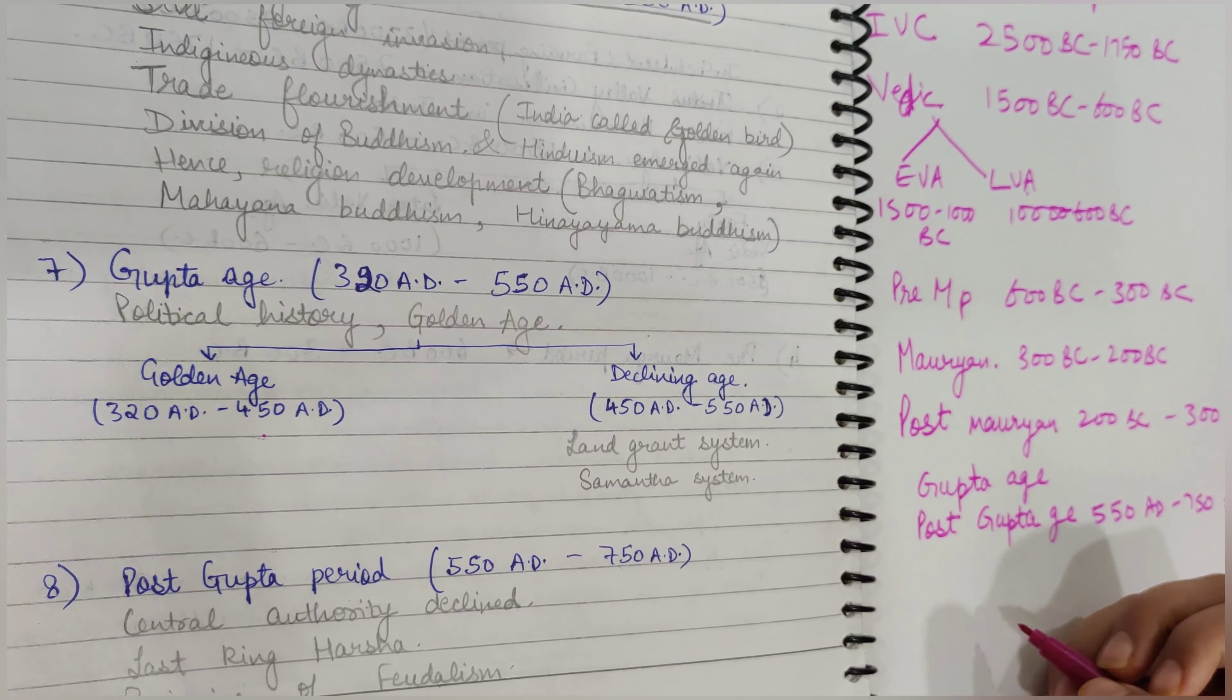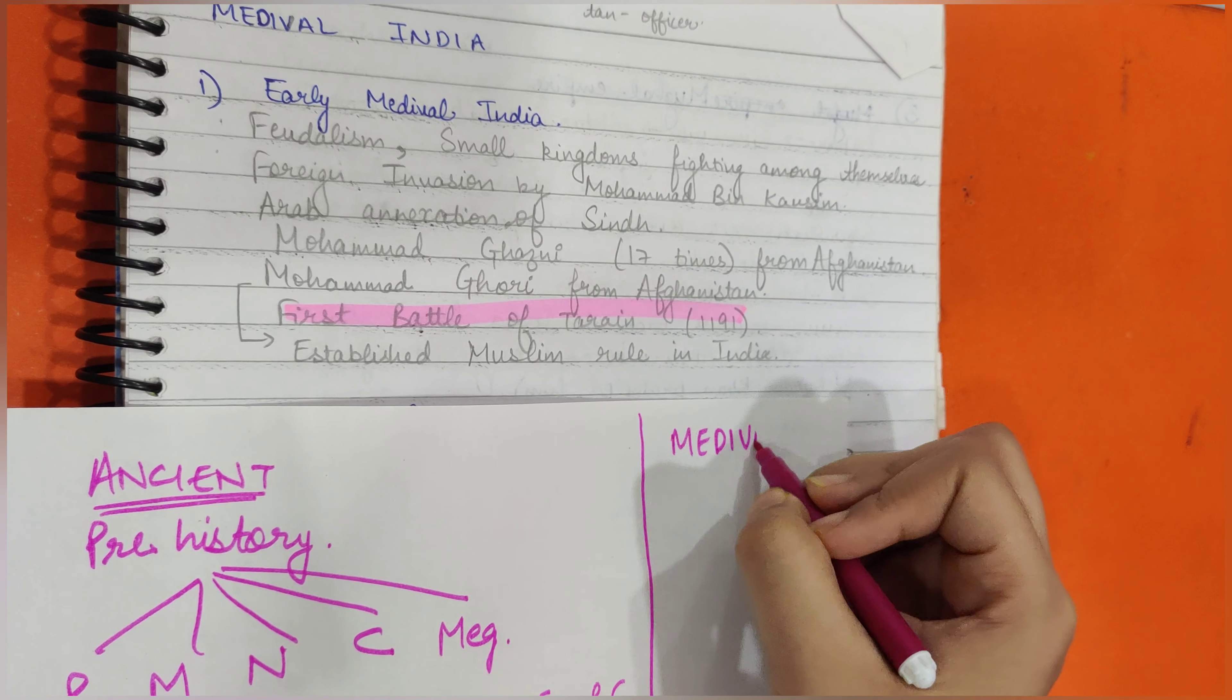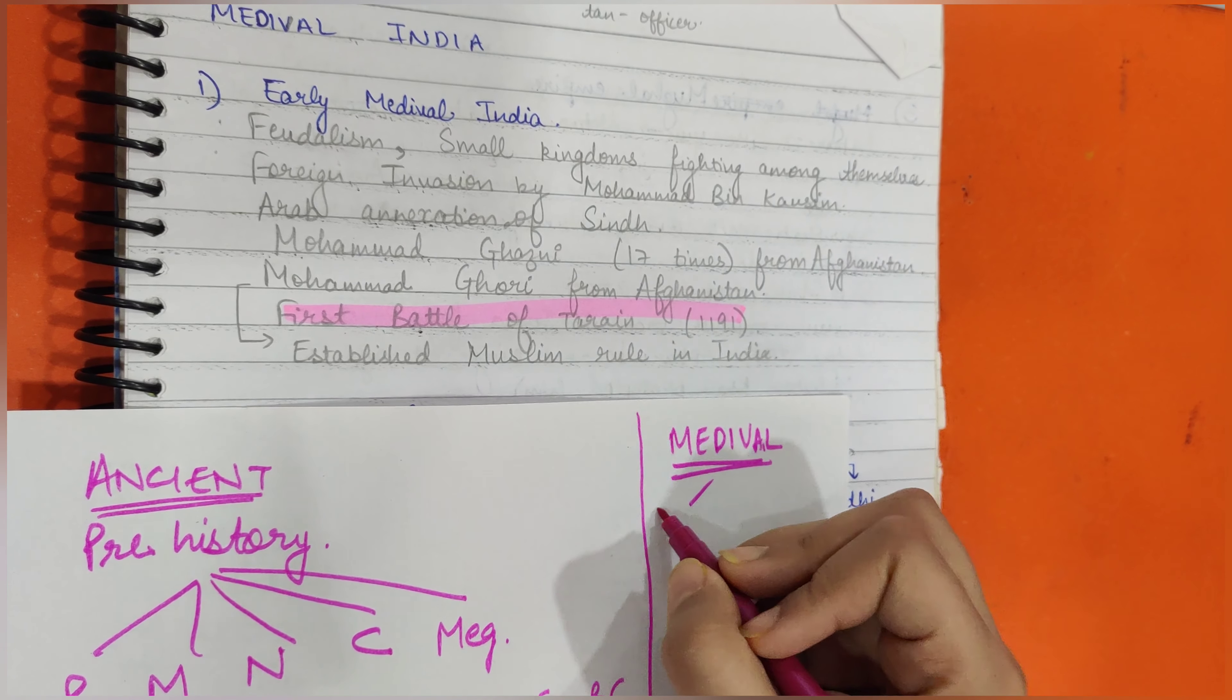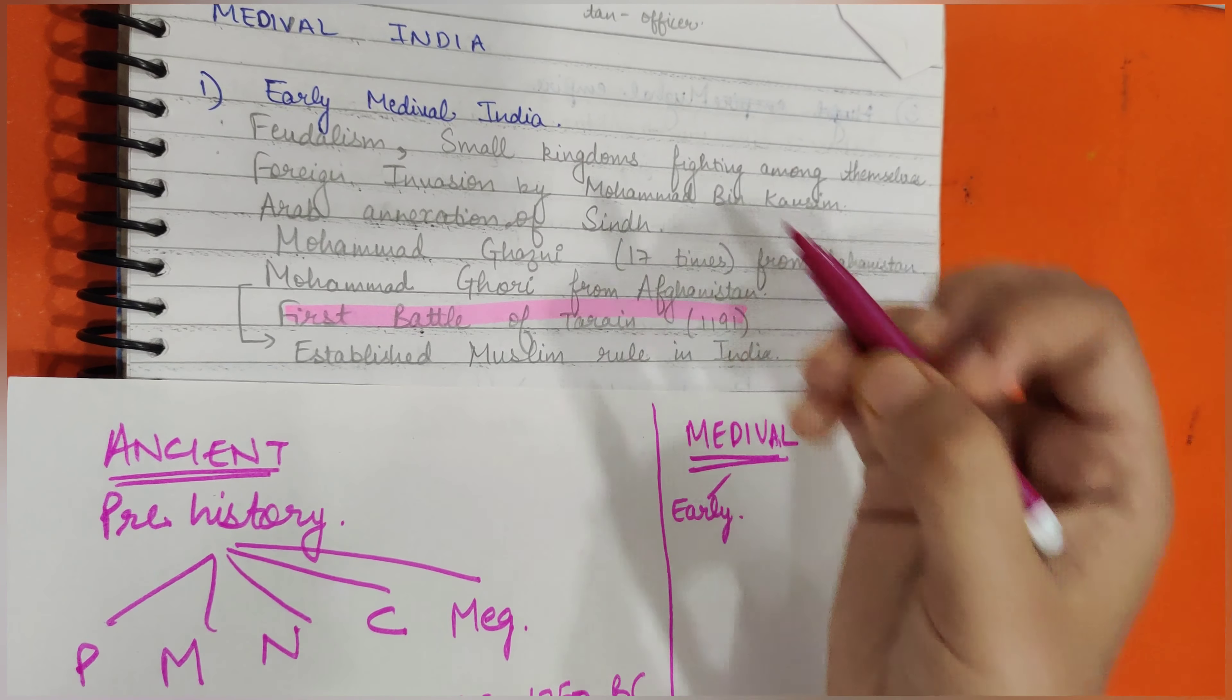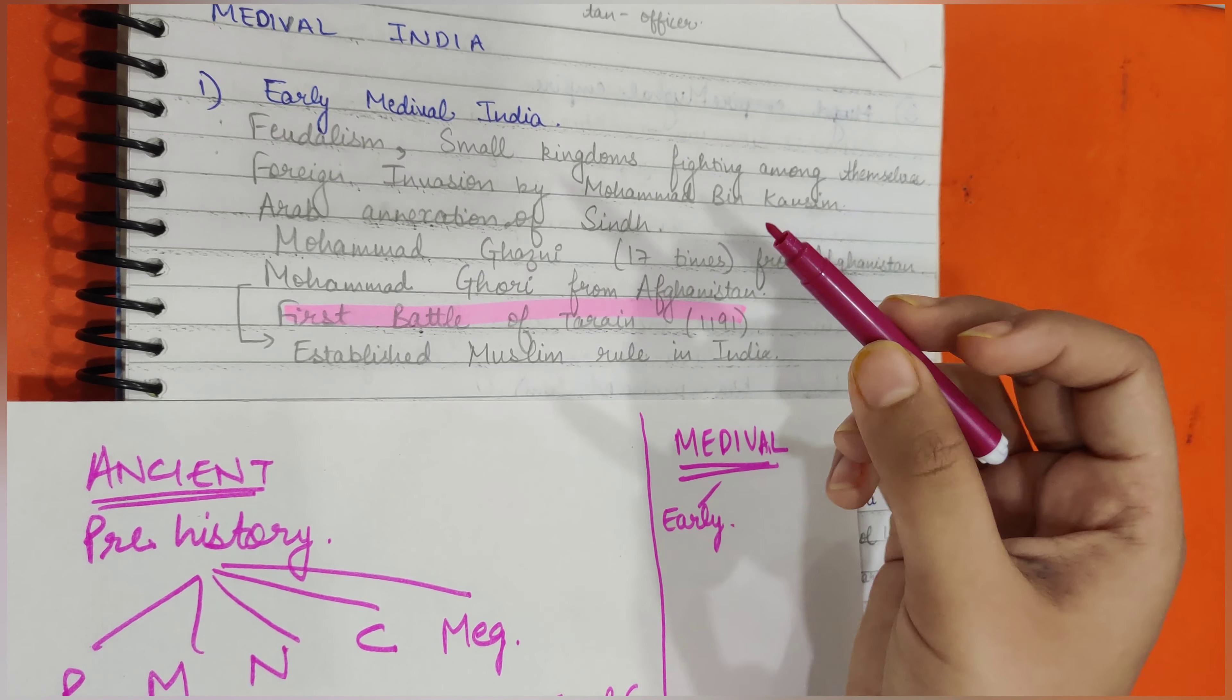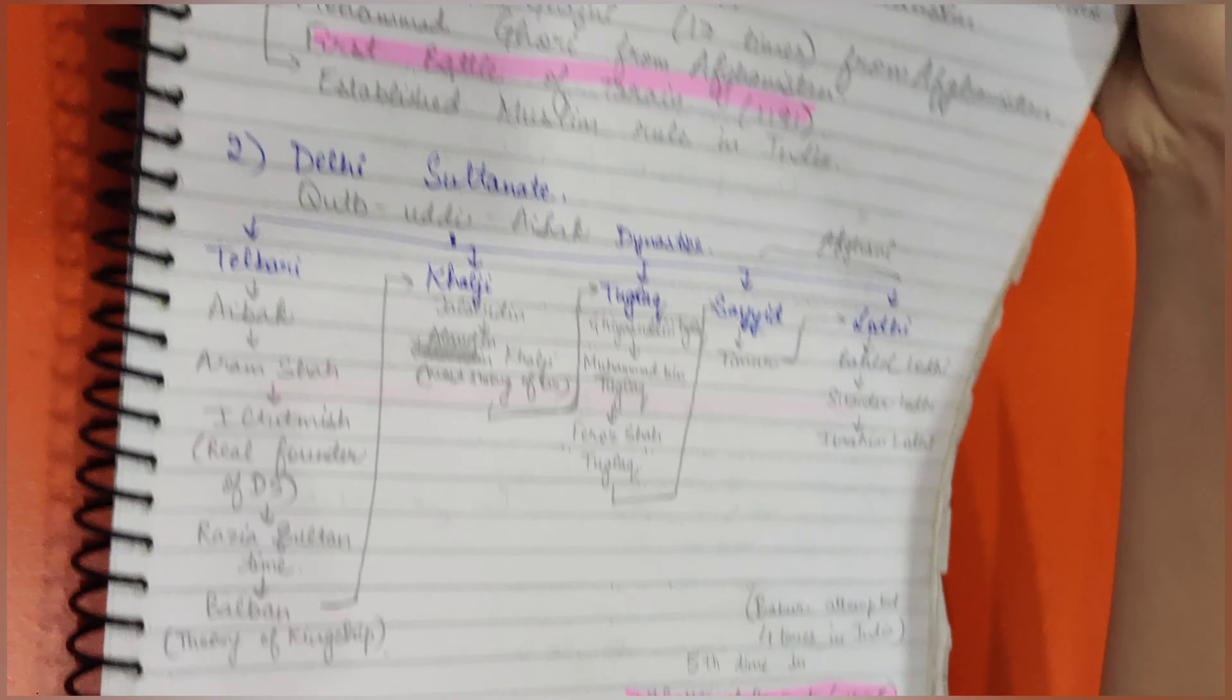After Ancient India, we will read about Medieval India. In Medieval India, first we learn about Early Medieval India, in which we learn about feudalism and all the foreign invasions: Arab invasions, annexations by Mahmud, invasion of Muhammad Ghazni, and Muhammad Ghori.